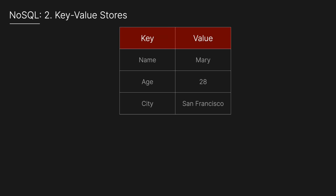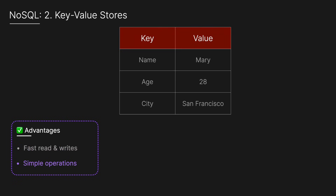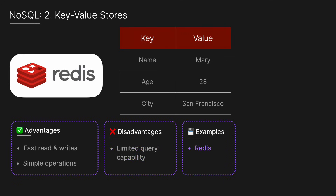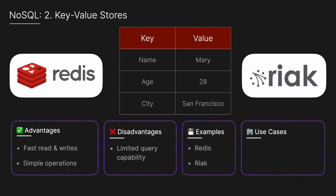Next, we have key-value stores, where data is stored as simple key-value pairs. The advantage is that they are extremely fast for reads, writes, and other simple operations. However, the disadvantage is limited querying capabilities — you generally need to know the key to access the value. Examples include Redis and Riak, and it's perfect for caching, session management, and real-time analytics.